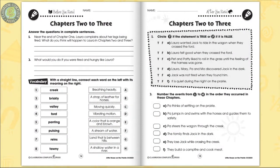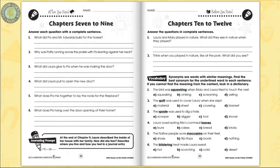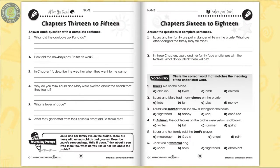Students put themselves in Laura's shoes as she experiences the hardships of living on the prairie. Test student comprehension of key vocabulary words found in the novel. Students explore what they learn about life on the prairie, particularly with how Pa builds the log cabin. Challenge students to describe Laura's surroundings while living on the prairie.